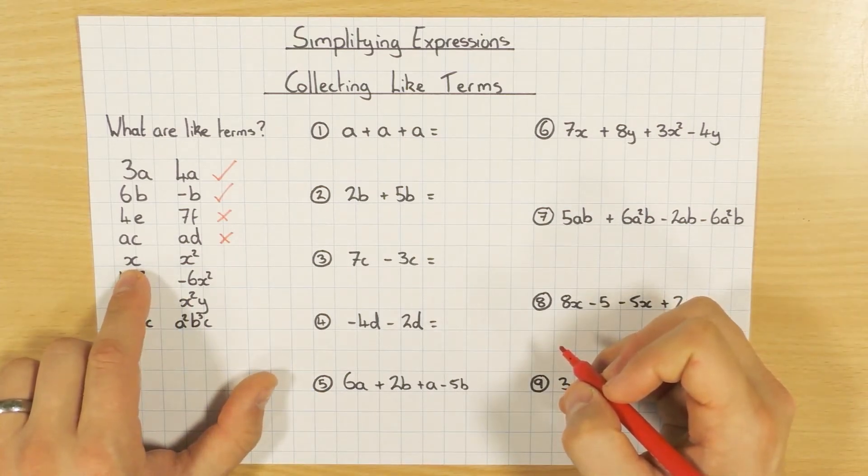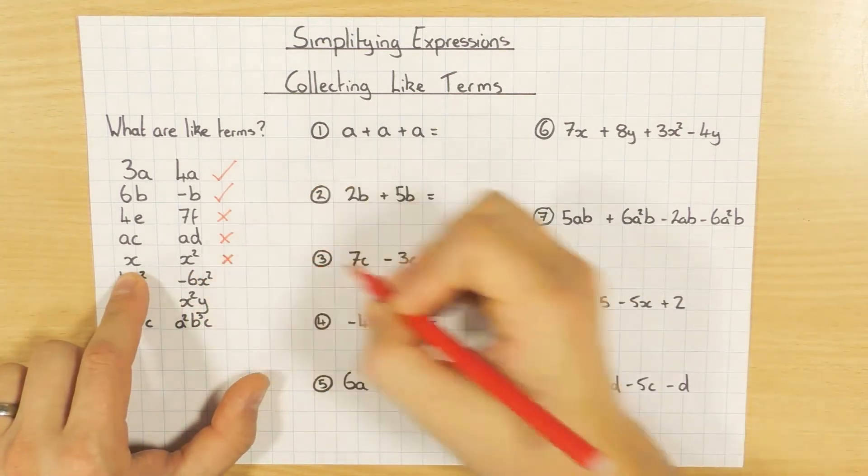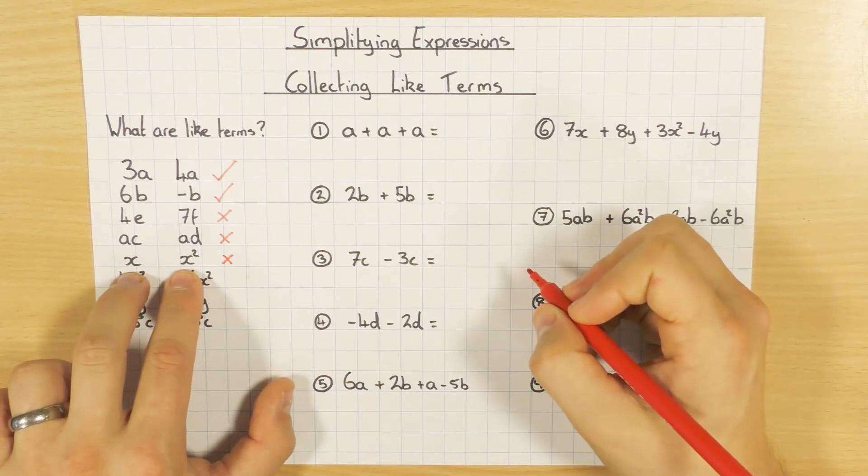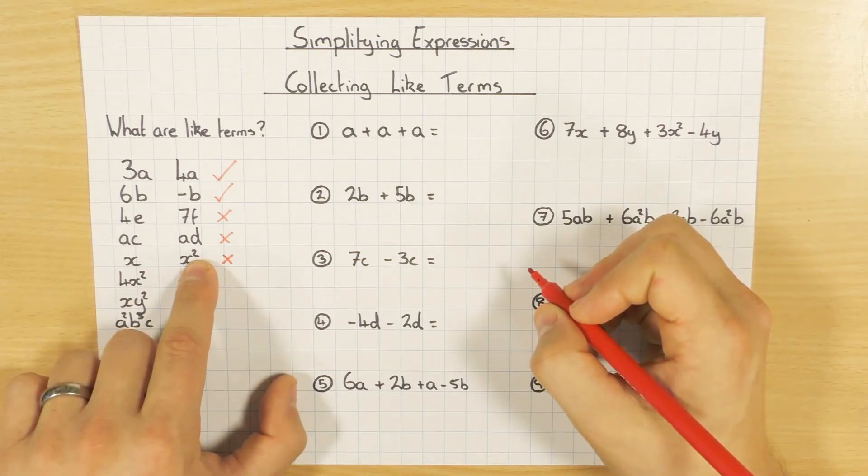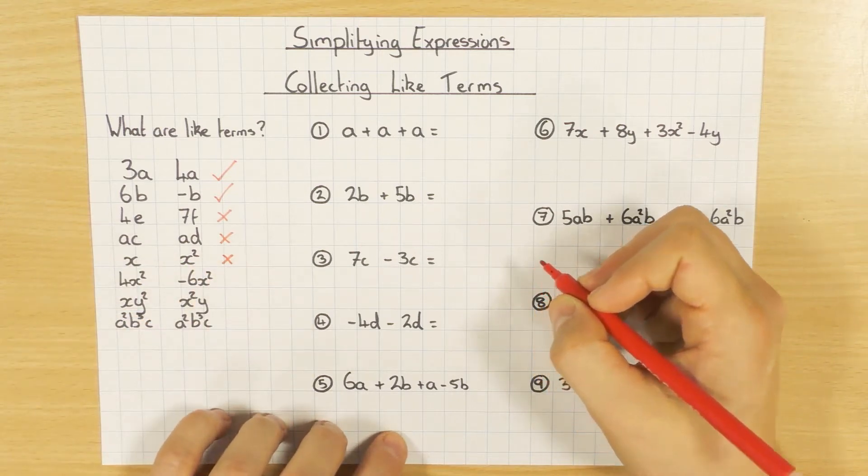This is where it gets a little bit more interesting. X and X squared. These are not like terms, because although the letters are the same, the powers, the indices, also need to be the same. So X and X squared are different. They are not like terms. We cannot simplify them.